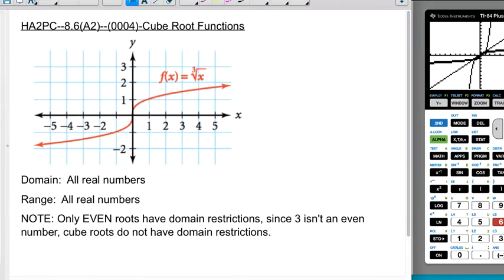A three is an odd power, and a cube root is an odd root. So there are no domain restrictions, and there are no range restrictions here either.